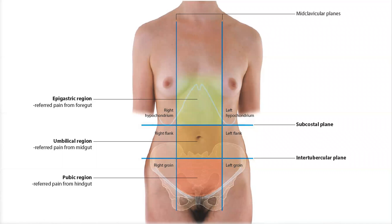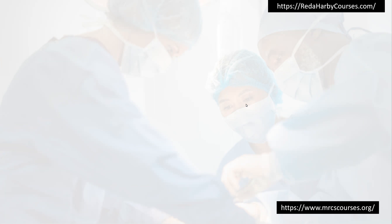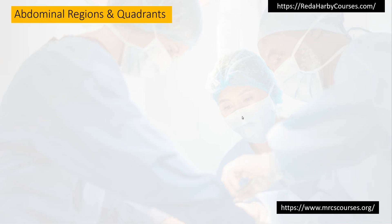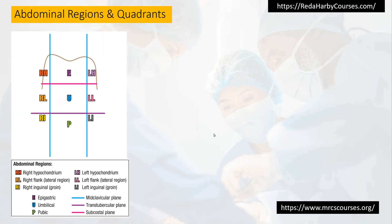Hello everyone. We are going to talk about acute abdomen, or acute abdominal pain localization according to the region or the quadrant of the patient's abdomen. The abdomen is divided by two methods: quadrants — four quadrants — or nine regions. We will start by abdominal regions and the quadrants.